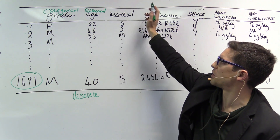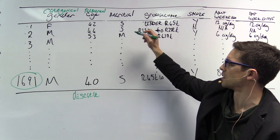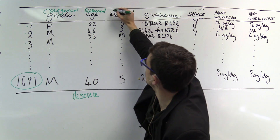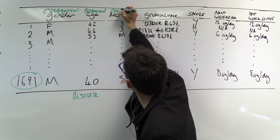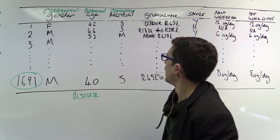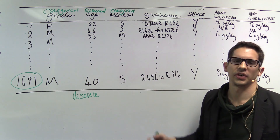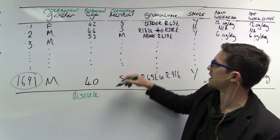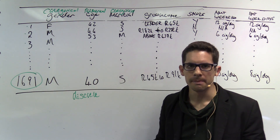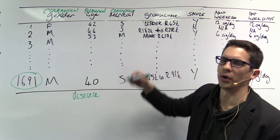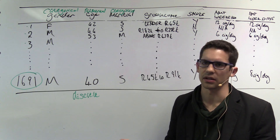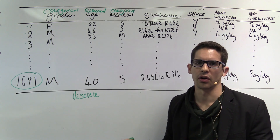Next is marital status. The values are single, married — these are definitely not numbers, so this is categorical. Is it ordinal? No — there's no natural ordering where single is higher than married or vice versa. So marital status is just a plain categorical variable.